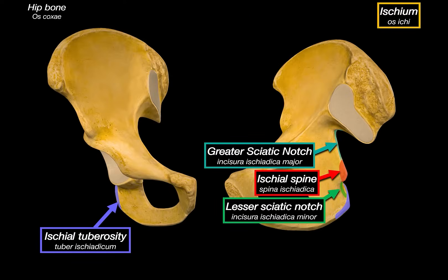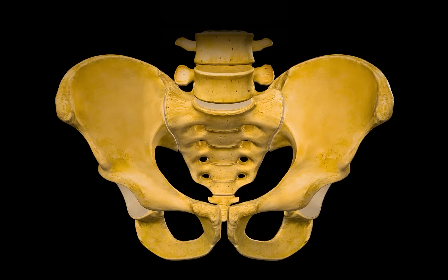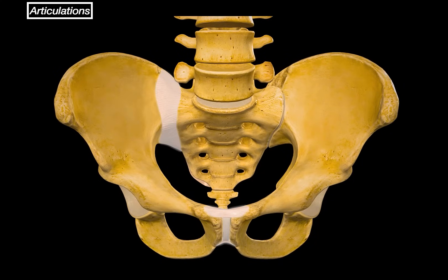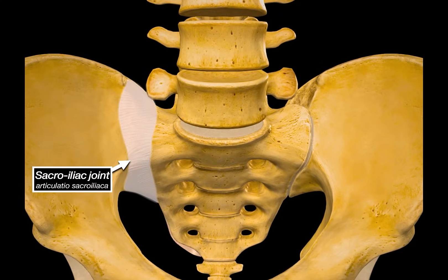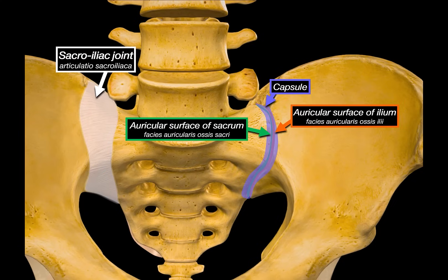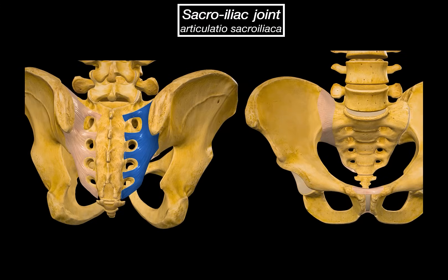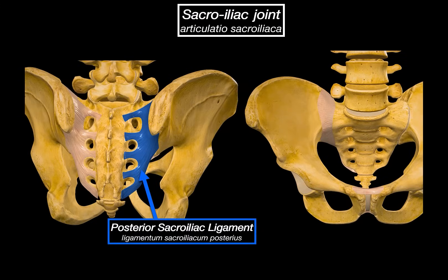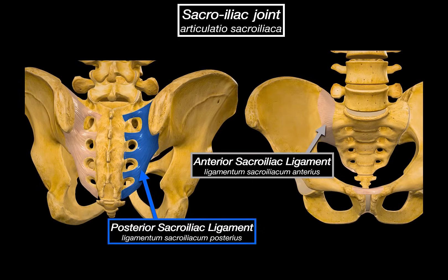Now let's talk about the articulations of the pelvis. The first one is the sacroiliac joint, formed between the auricular surface of the sacrum and the auricular surface of the ilium. These surfaces interlock tightly, and the joint is surrounded by a short but extremely strong capsule, further reinforced by several ligaments. The main ones are the posterior sacroiliac ligament and the anterior sacroiliac ligament. There is also a deep interosseous sacroiliac ligament, which sits between the bones and is one of the strongest ligaments in the entire body, playing a key role in stabilizing the sacroiliac joint under load.